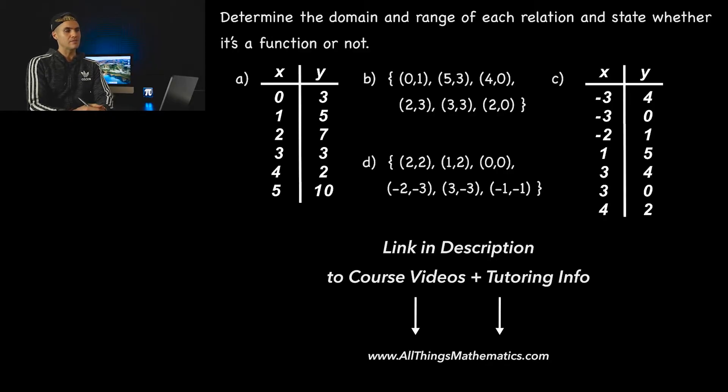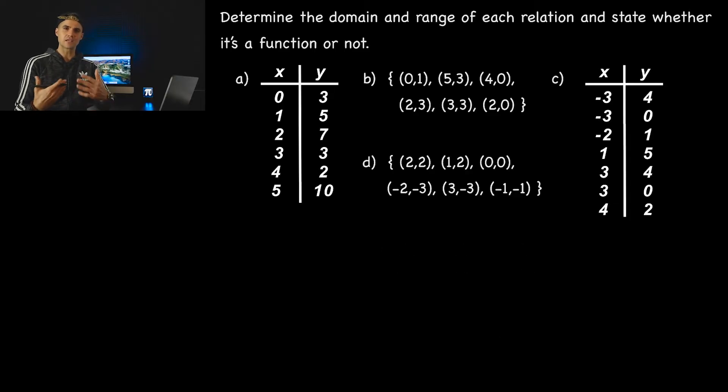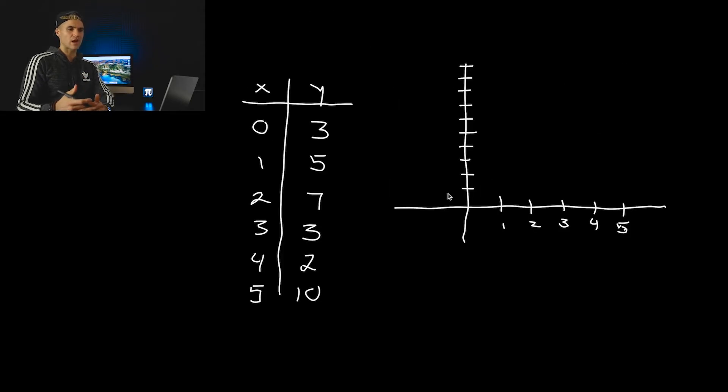So in this particular case, what I personally like to do, at least at the beginning when you're getting more comfortable with these kinds of questions, is if you're given a table of values like we are in part A, I like to first take the table and then graph it. Now when you're making this graph, it doesn't have to be anything too specific or to scale, just so you could see and get an idea of how this relation is actually looking. So if I take these points, zero and three, that's going to be here.